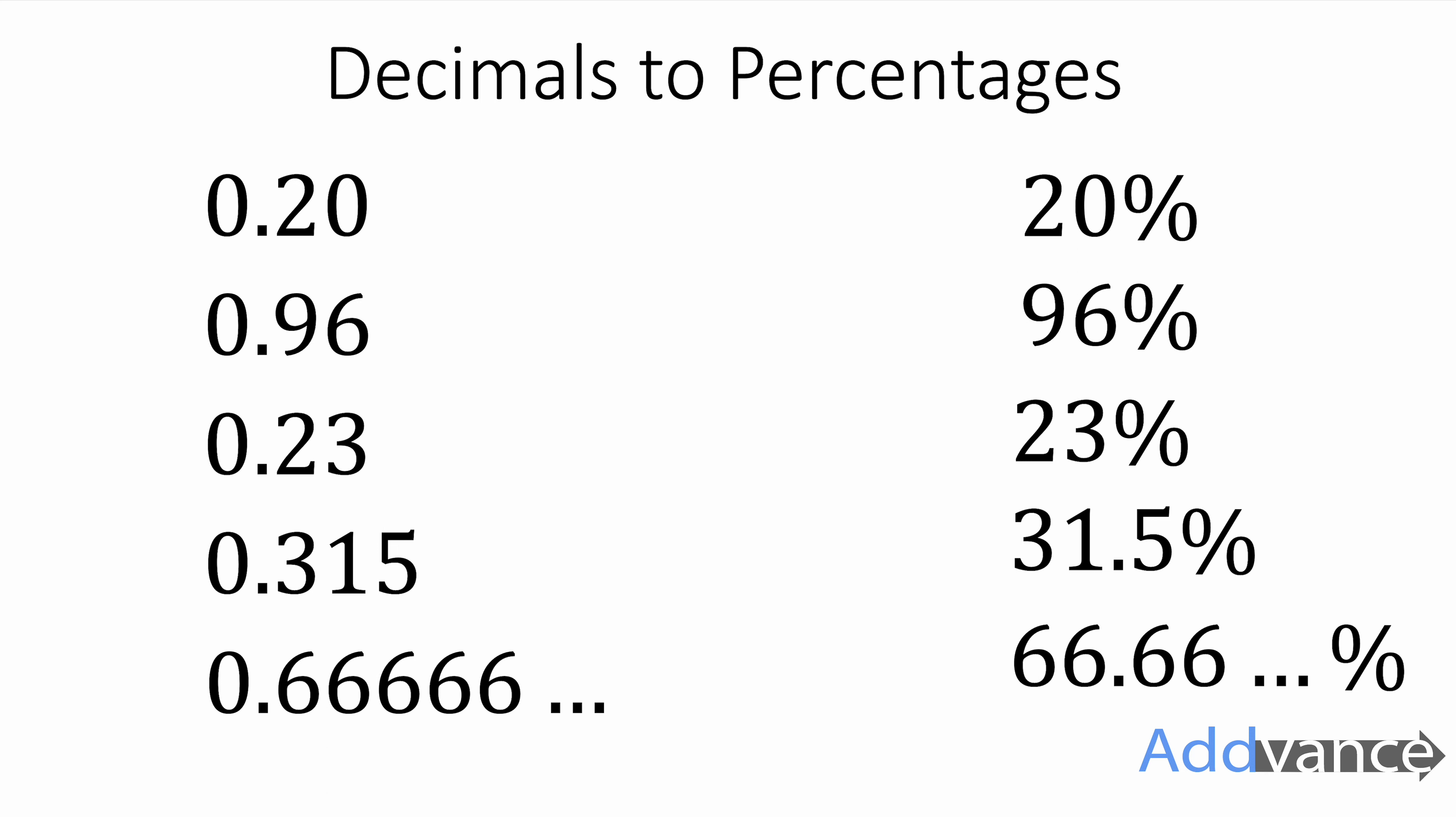Super easy. It's the same digits, just the decimal has moved two places. We've multiplied or divided by 100 to go backwards or forwards.